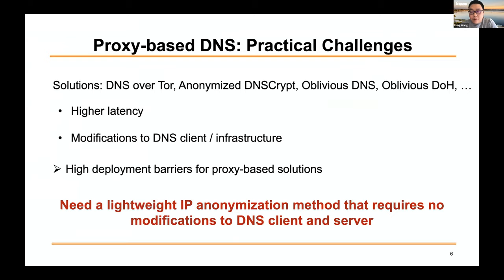One possible solution is proxy-based DNS, such as DNS over Tor or VPN. Proxy-based DNS uses on-path proxies between a DNS client and the resolver to decouple client IP addresses from DNS queries, ensuring no party other than the client can see both the real query and real client IP simultaneously. This is promising but has hurdles: proxies may introduce added latency, become performance bottlenecks under heavy load, and require special client software configuration, which can introduce human errors and unintentional DNS leakage.